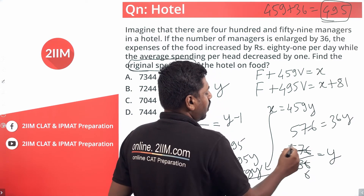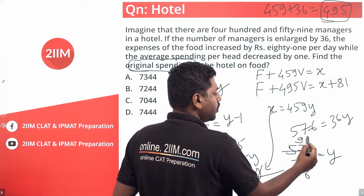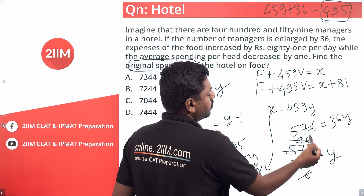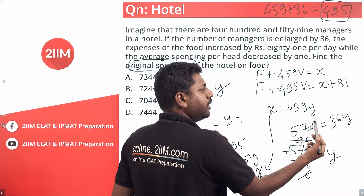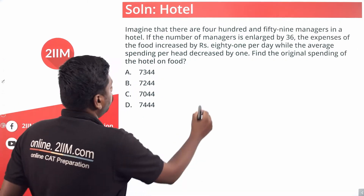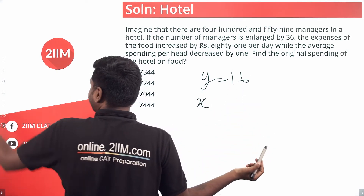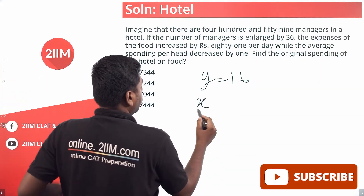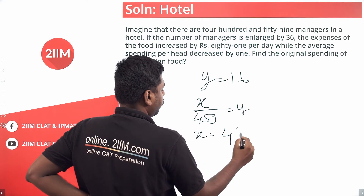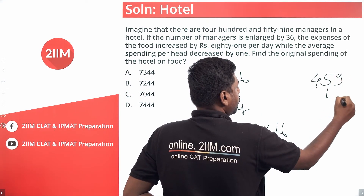Solving 576 divided by 36 gives y equals 16. Now that we know y is 16, we use x equals 459 times y, so x equals 459 times 16.